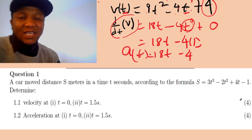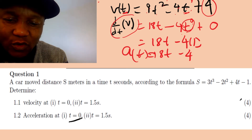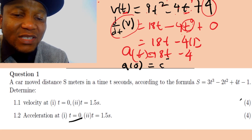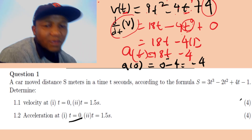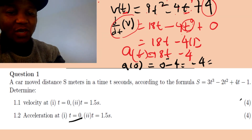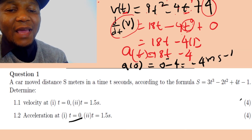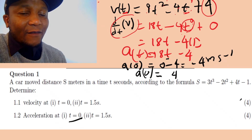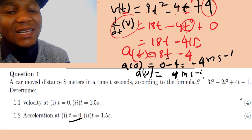So acceleration in terms of t is: a(t) = 18t minus 4. To find acceleration at t = 0: we substitute 0, so 18 times 0 equals 0, minus 4 equals negative 4. Acceleration equals negative 4 meters per second squared. Because it's negative, this means the car is decelerating, not accelerating.